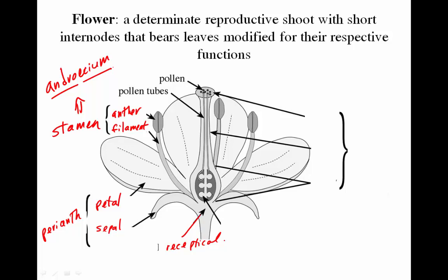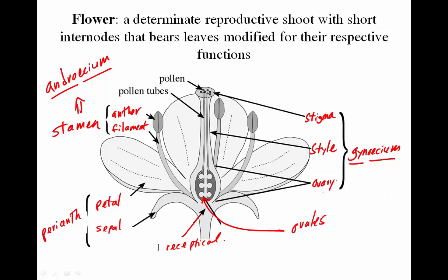On the female side, we have the gynoecium — 'gyno' meaning female, 'oecium' meaning house — the house of the female. It has three parts: the stigma, which means 'the spot,' the style, and the ovary. Inside the ovary we have the ovules. At maturity, the ovary becomes the fruit and the ovules become the seeds.